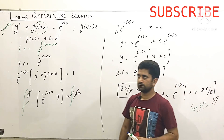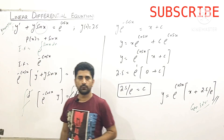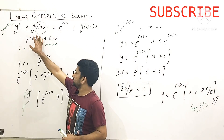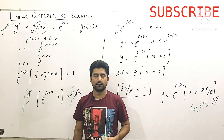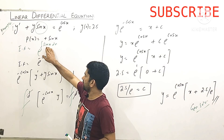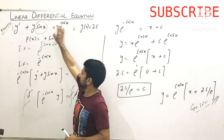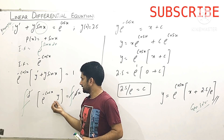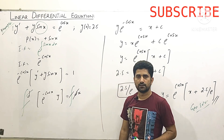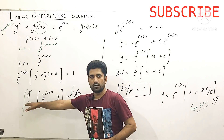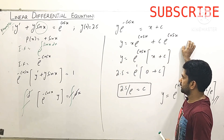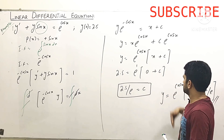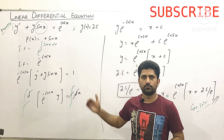To summarize: first, check that the coefficient of y' is 1; if not, divide the entire equation by that term. Then find P(x), the term present with y, and compute the integrating factor e^(∫P(x)dx). Multiply the complete equation by the integrating factor, close the left side as d/dx[I·y], take the integral on both sides, and solve. If an initial condition is given, impose it to find C, then substitute back to get the final solution.